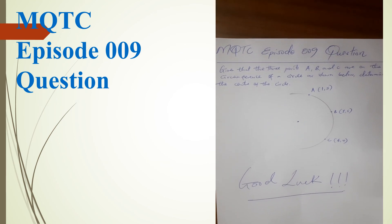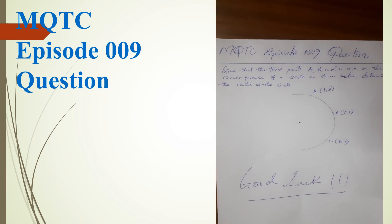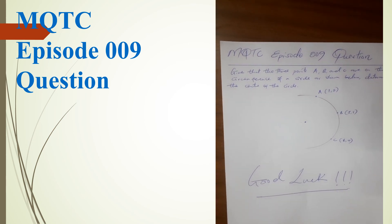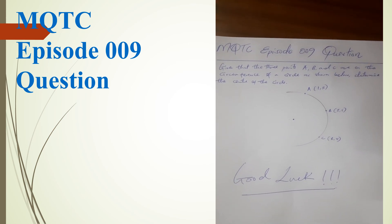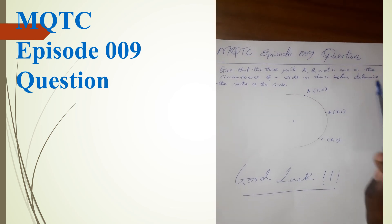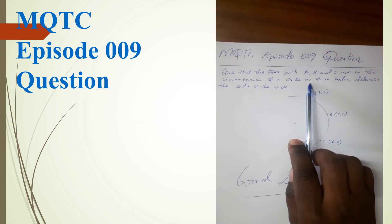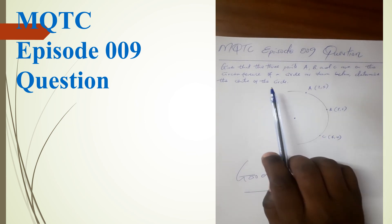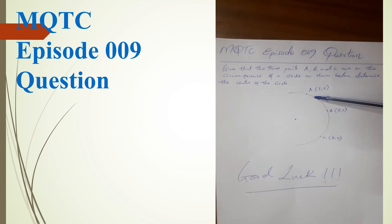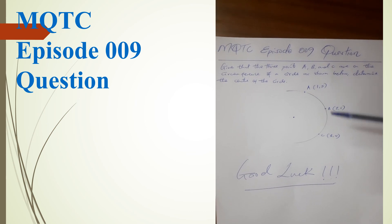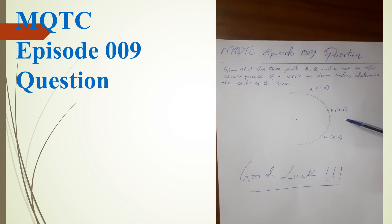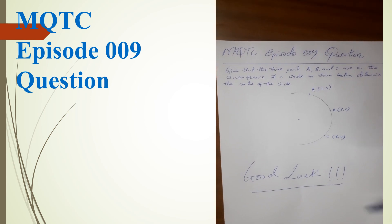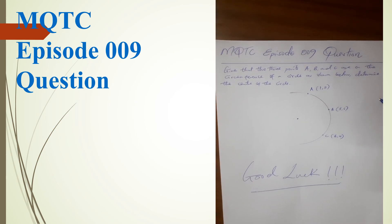I want to take this opportunity to welcome you to MQTC episode 009 question. Our question says: given that the three points A, B, and C are on the circumference of a circle as shown below, determine the center of the circle. Point A has coordinates (1, 5), point B has coordinates (5, 5), point C has coordinates (6, 4). Good luck! See you next time.